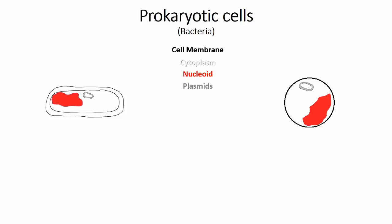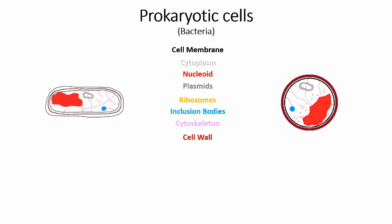Other structures that can be found include ribosomes, which are smaller in these cells than in eukaryotic cells; inclusion bodies, which are compartments similar to those found in eukaryotic cells; and a cytoskeleton to maintain the cell structure in the same way as eukaryotic cells. Bacterial cells often have a cell wall, which can mainly come in two forms and depend on the membrane structure of the cell. A cell that has a single membrane will often possess a thick cell wall on the outside of the cell, with a double membrane cell having a thin cell wall in the space between the two membranes. These cells also have flagella, anchored to the cell membrane and cell wall, and protruding from the outside of the cell. These structures are used for movement of the cell in its environment, should they require it.